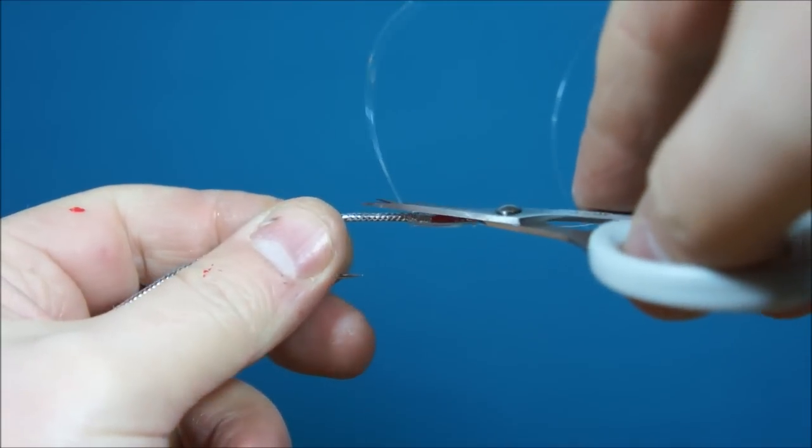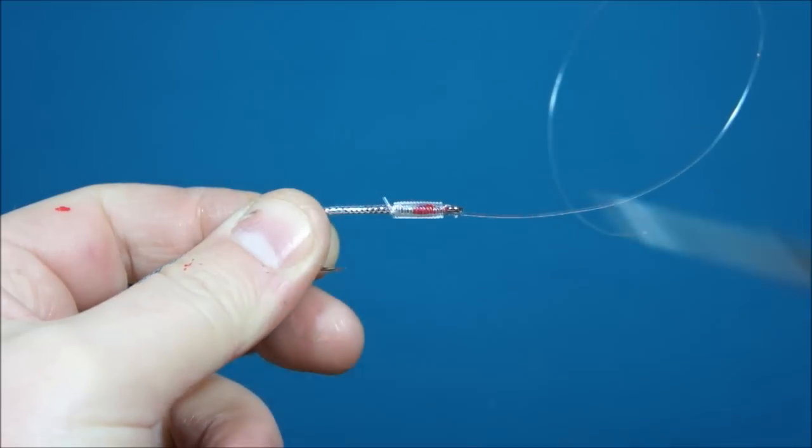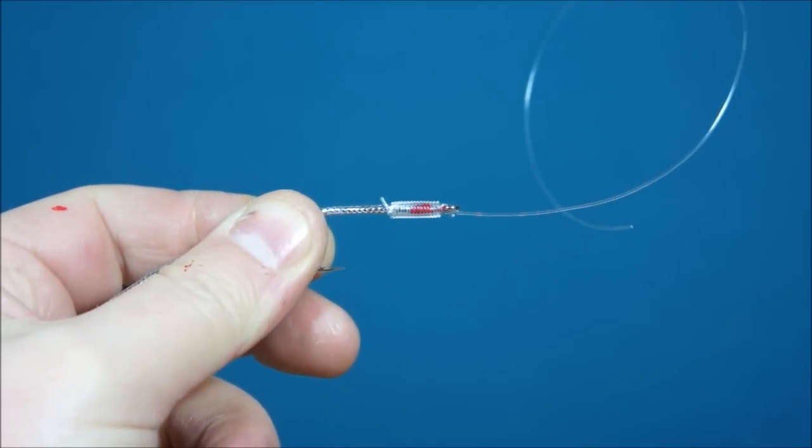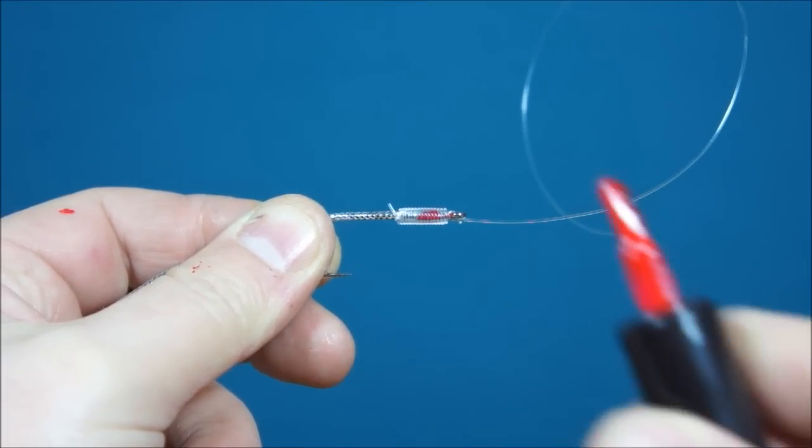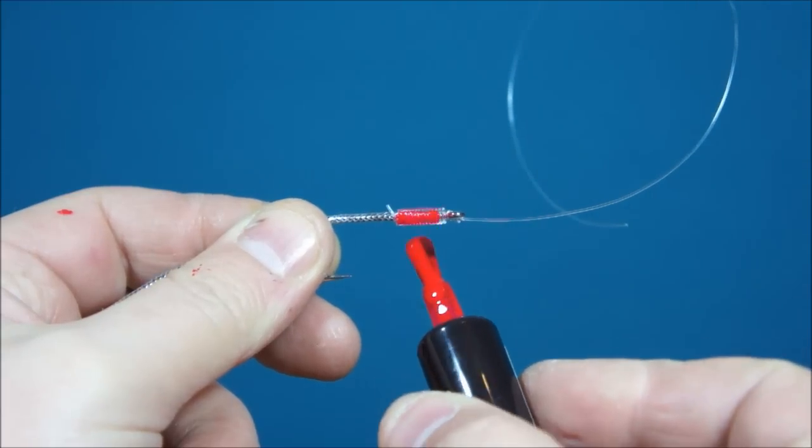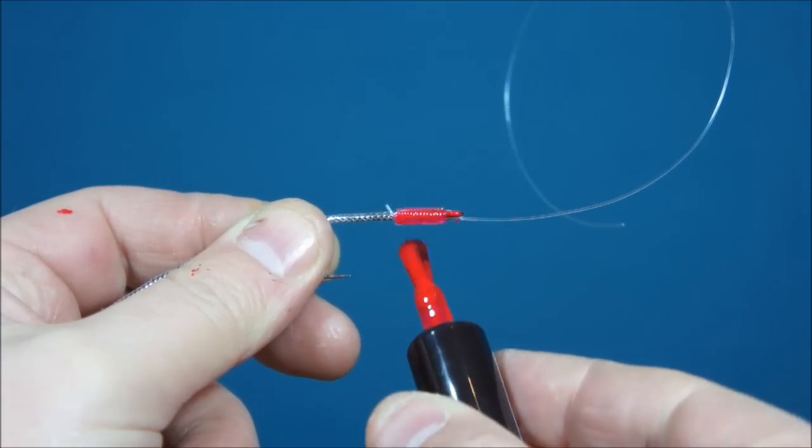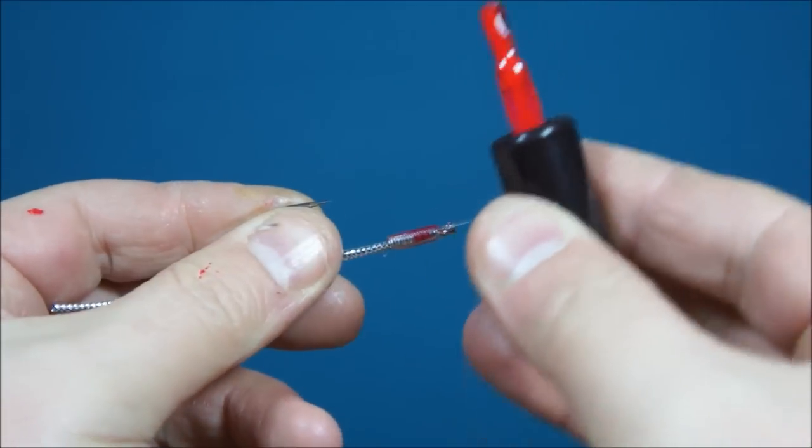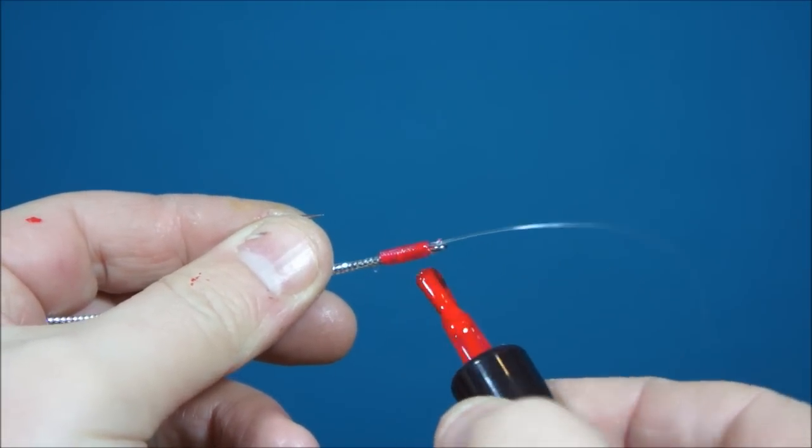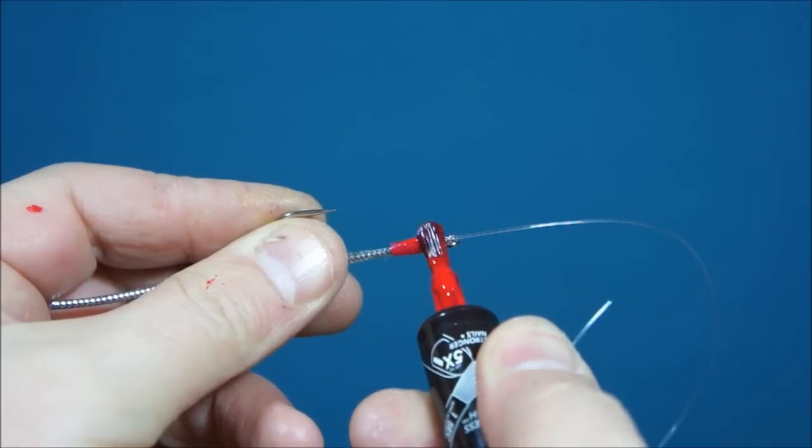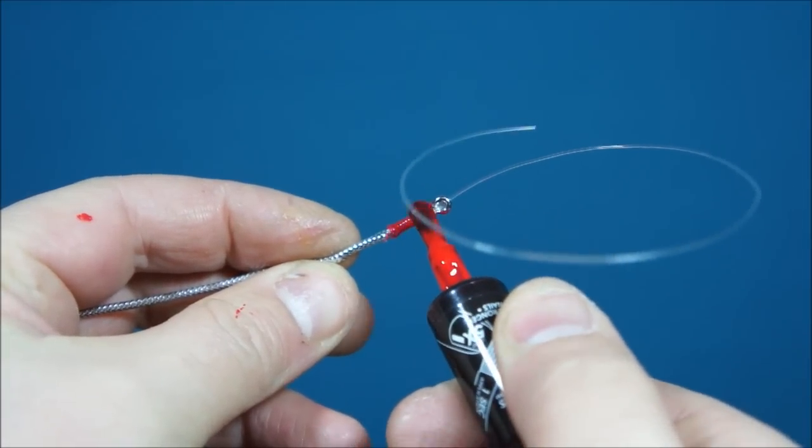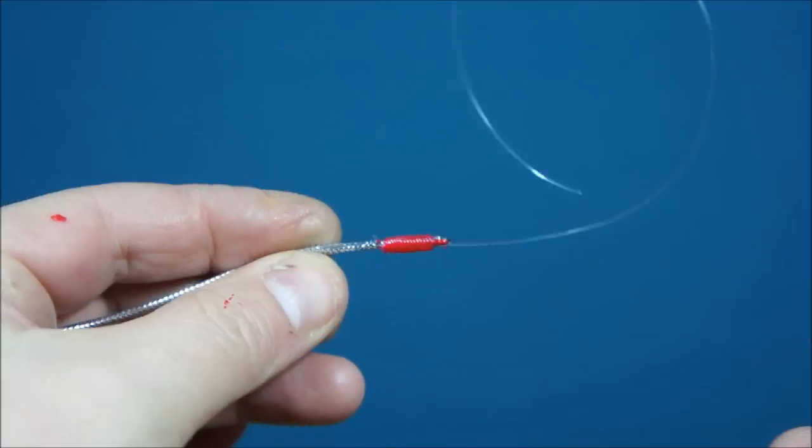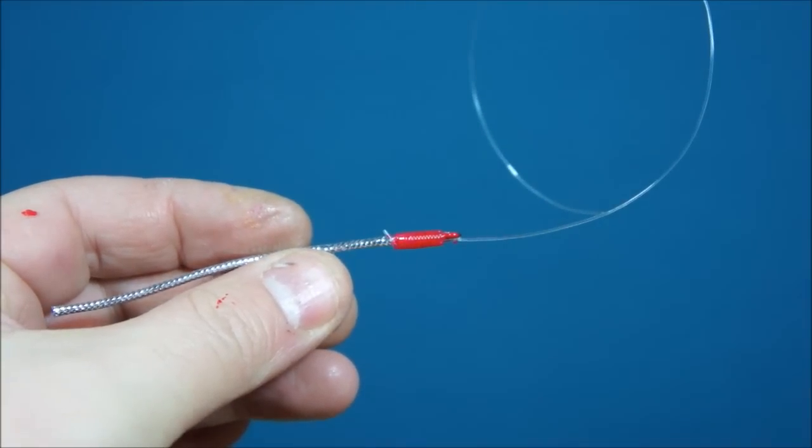Then it's just a case of trimming this tag end here. Leaving a bit on it just to protect the knot. And finally to finish, just a quick coat of nail varnish. There we go.